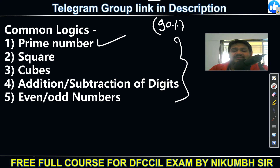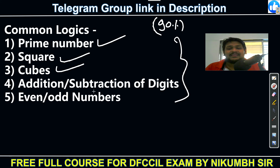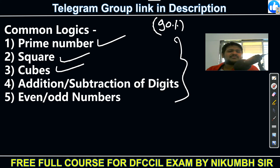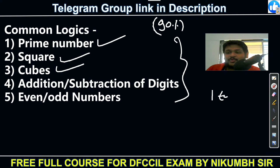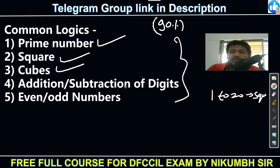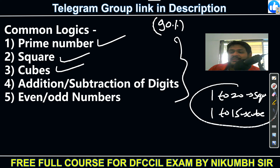Common logics to check: whether numbers are prime, whether there are squares or cubes, addition or subtraction of digits, even or odd numbers. For squares, remember 1 to 20 squares by heart — very important. For cubes, remember at least 1 to 15 cubes. These are your homework tasks for today.